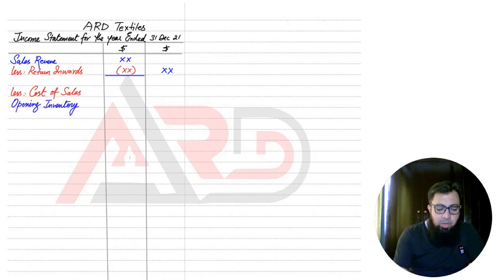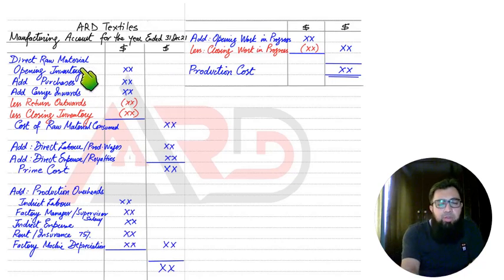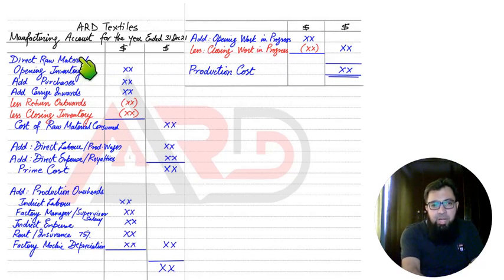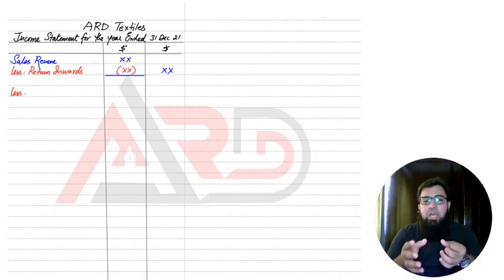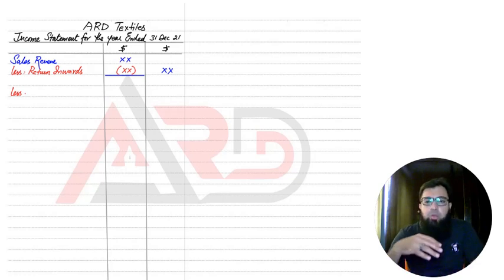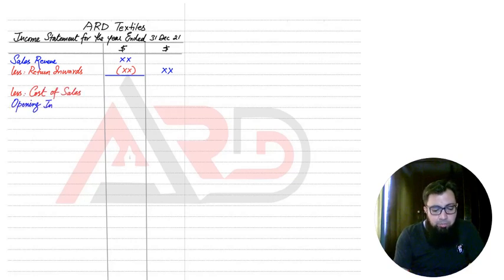So we start with opening inventory. The inventory written here is inventory for finished goods. Remember that in the manufacturing account we wrote inventory for raw materials and work in progress. The product starts in raw material form, then comes to work in progress form. But in the income statement, this part is for an outlet — not a factory. In a sales outlet, we do not have raw material inventory or work in progress. Instead, we have inventory for completed goods, and opening inventory would be for finished goods.